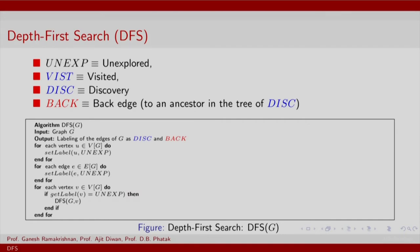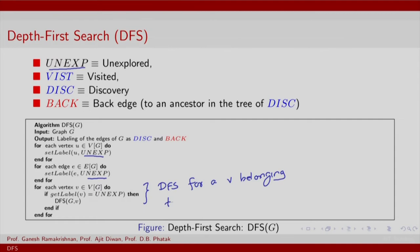Like before, we will adopt a legend for nodes with different labels that will be assigned to nodes. By default every node is unexplored, and in fact every edge is also unexplored. That is the initialization: every node and every edge is labeled as unexplored. Then for each connected component in the graph you find a vertex and perform a DFS.